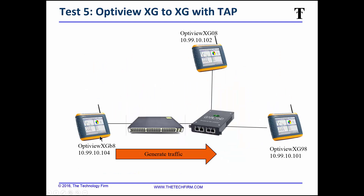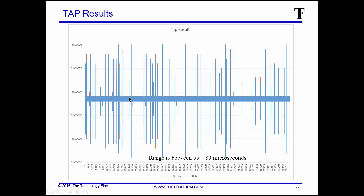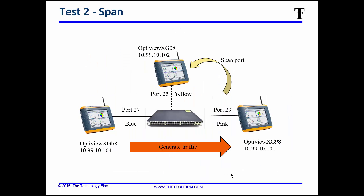For the tap test, I generate traffic and have the tap port and a destination. This time I'm comparing the arrival-side packets from both ports. You'll see the same pattern as before, but now you can see some orange tips — the orange represents the extra latency added by the tap. The range is 55 to 80 microseconds.